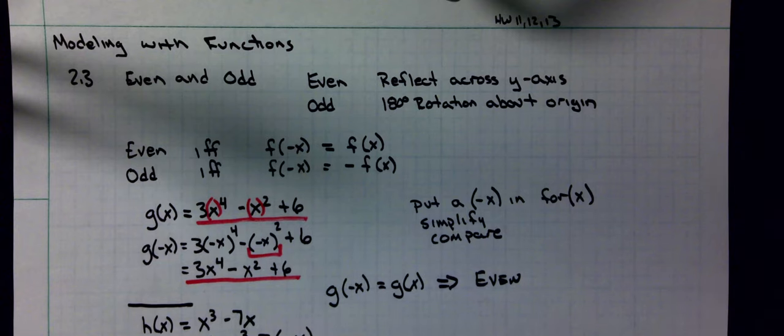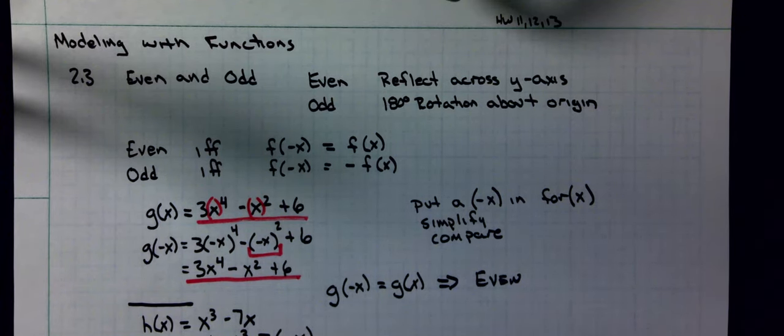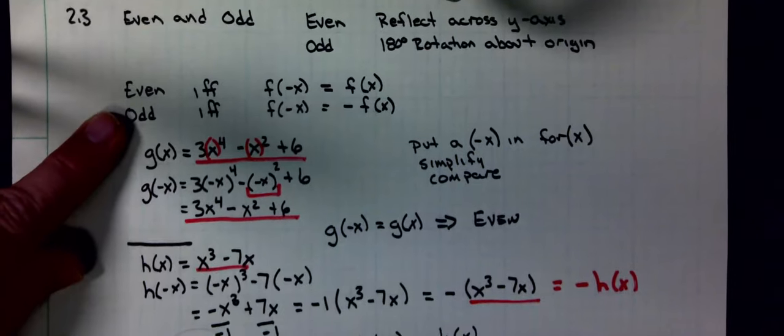What I can do is pull a -1 out of both of these terms, pull it out by factoring it out. -x^3 divided by -1 is a positive x^3. 7x divided by -1 is a -7x. I can rewrite that without that 1 there, so -(x^3 - 7x). Notice that x^3 - 7x is just my h(x), so this is actually -h(x). Ultimately h(-x) equals -h(x), which is my definition of an odd function.